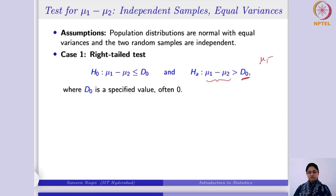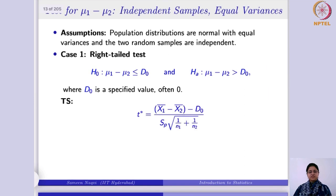Taking d₀ as 0, we test μ₁ − μ₂ > 0, which means μ₁ > μ₂ as the alternative, and the null hypothesis would be that μ₁ ≤ μ₂. So in the right tail test, null and alternative are defined this way. The next thing we need is the test statistic.